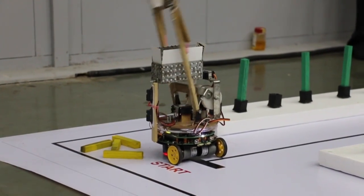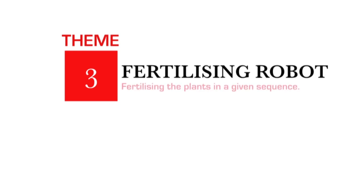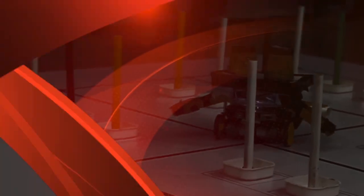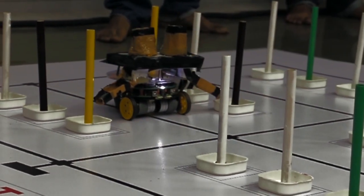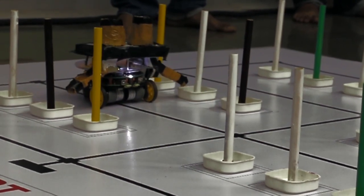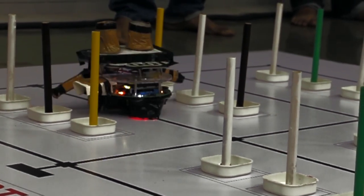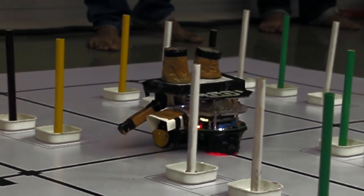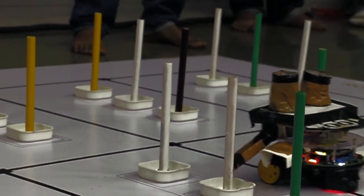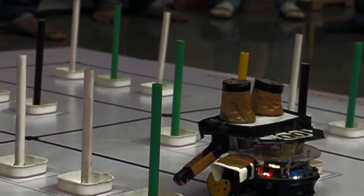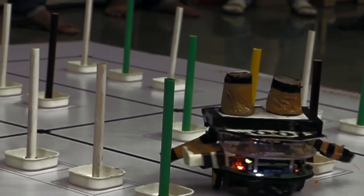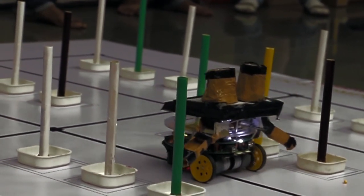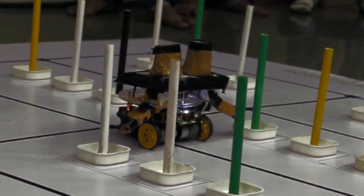The fertilizing robot is programmed to fertilize plants in a given sequence — the black plants first, then the green plants. To optimize, they built two of these devices. They learn how to interface sensors and actuators themselves.